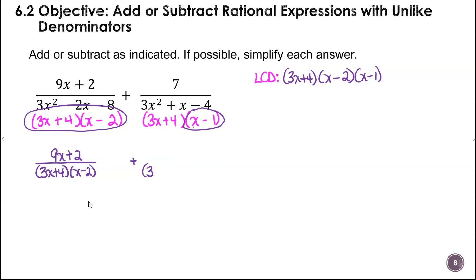I want to show the multiplication. 3X plus 4 times X minus 1, and that was a 7. Now we're going to multiply by the missing binomial. For the first one, it will be X minus 1. On the second one, it will be X minus 2. Then we're going to multiply out the numerators.